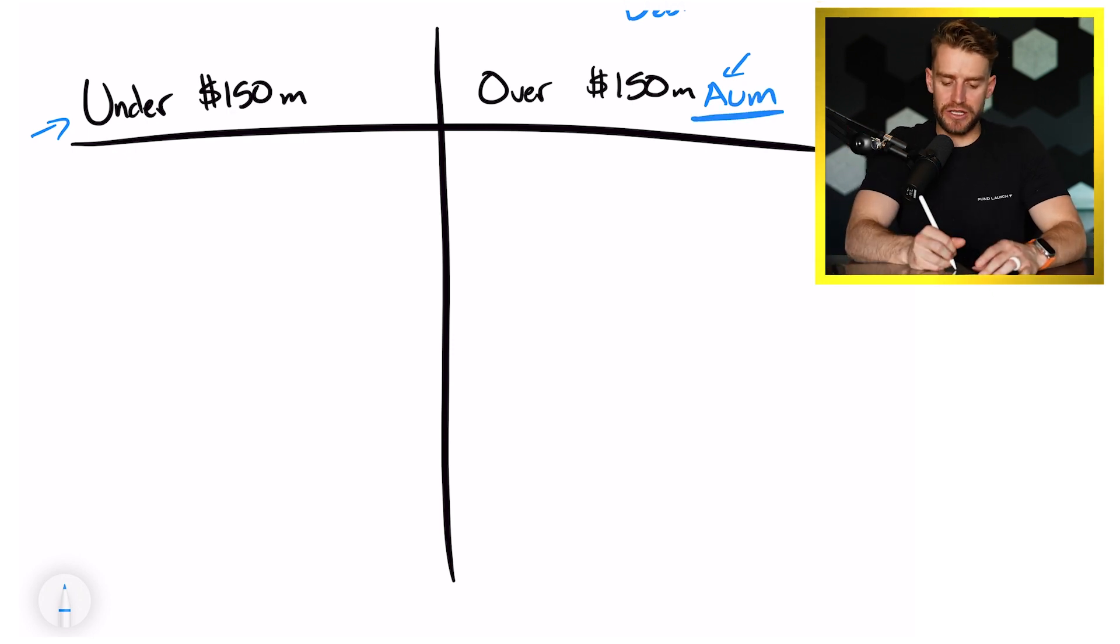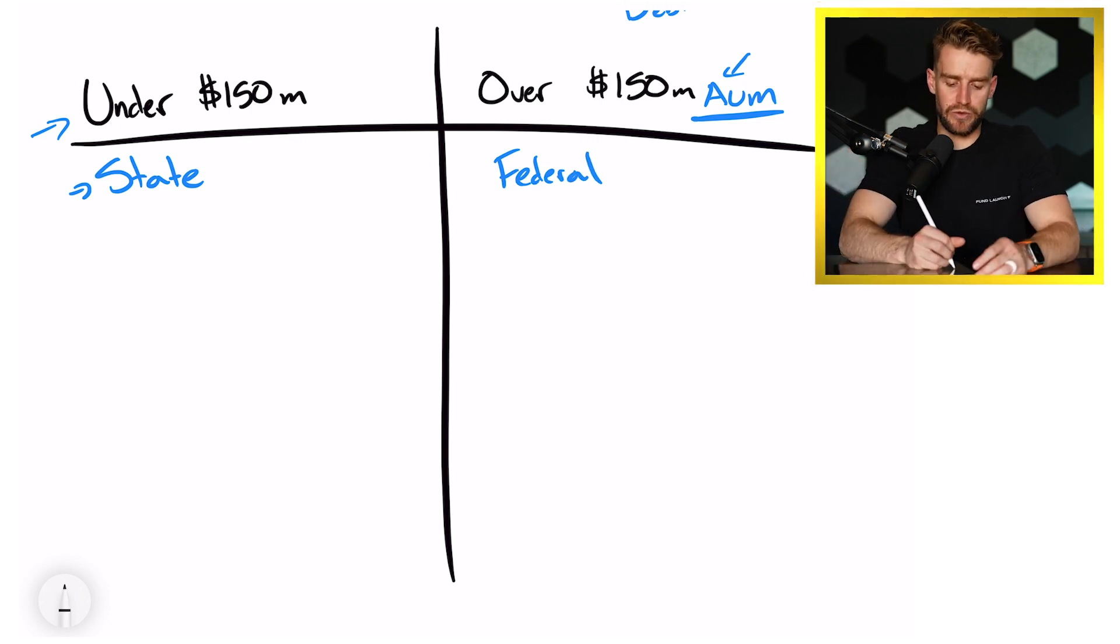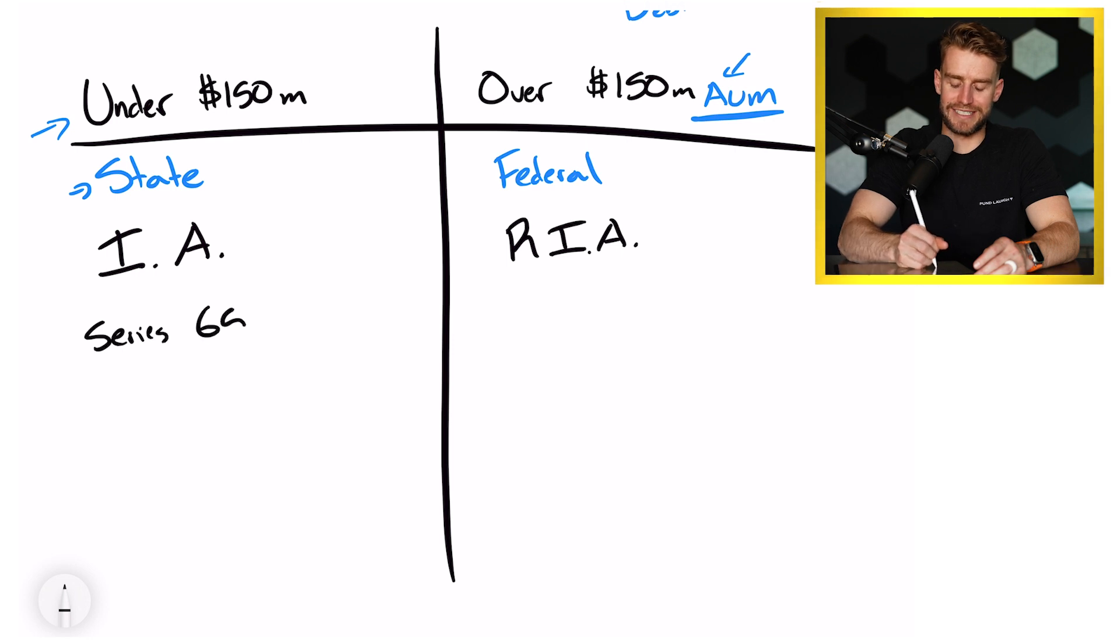If you're under $150 million, you fall under the state level. I'm talking about the United States here. Over $150 million, you fall under the federal level. You're not in both, you're in one or the other. Funds that are under $150 million would file as an investment advisor, an IA. If you're over $150 million, you would file as a registered investment advisor, an RIA. Now to do either one of these, you would need a series 65, which is a license for either one of these.